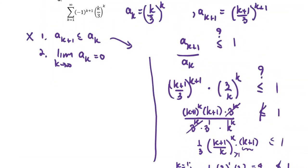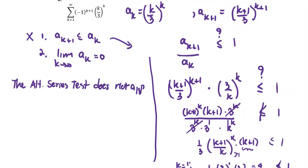So the first condition is not met and we do not have to verify the second condition. We just say the alternating series test doesn't apply. And again, if the alternating series test doesn't apply, we're going to use the divergent test.